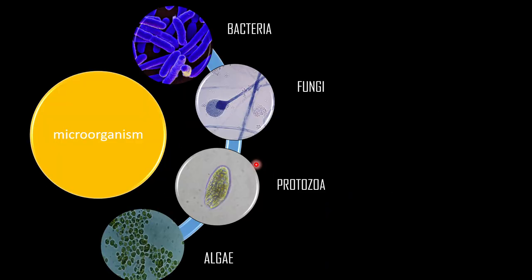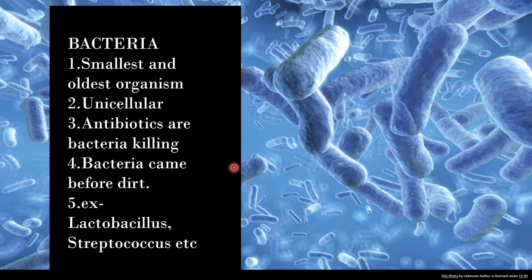Let's see the types of microorganisms: bacteria, fungi, protozoa, and algae. First is bacteria — they are the smallest and oldest organisms. They are unicellular, and antibiotics are used for killing bacteria.